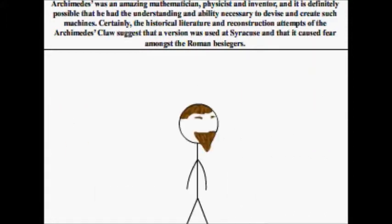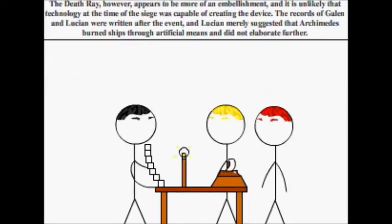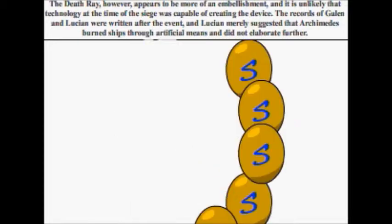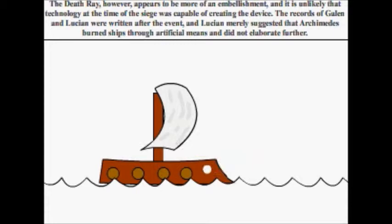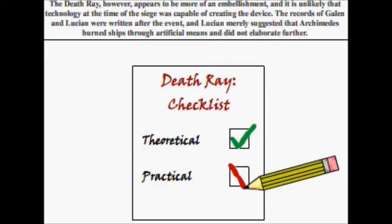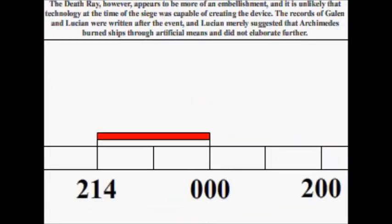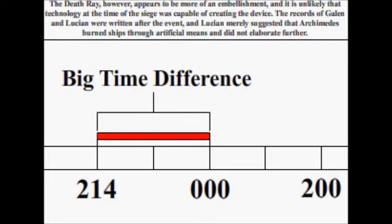The death ray, however, appears to be more of an embellishment, and it is unlikely that technology at the time of the siege was capable of creating the device. The records of Galen and Lucian were written after the event, and Lucian merely suggests that Archimedes burned ships through artificial means, and did not elaborate further.